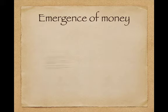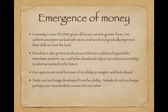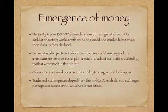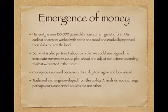Now, the emergence of money. Let's go right back to deep history. Humanity is — archaeologists argue over this — 150,000 years old or more in our current genetic form. Our earliest ancestors worked with stone and wood and they gradually improved their skills to farm the land. But what is also pertinent about us as a species is that we could see beyond the immediate moment. We could plan ahead and adjust our actions according to what we wanted in the future. Our species, paleontologists tell us, survived because of its ability to imagine and to look ahead.